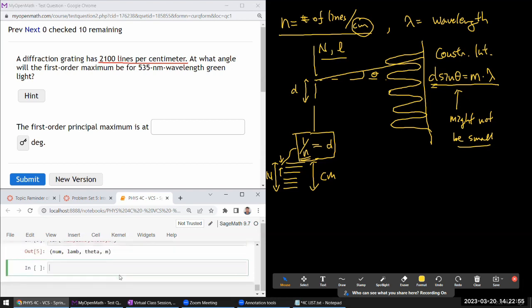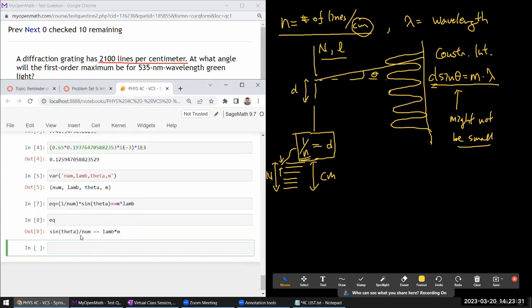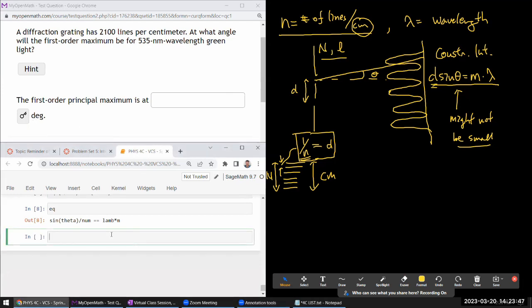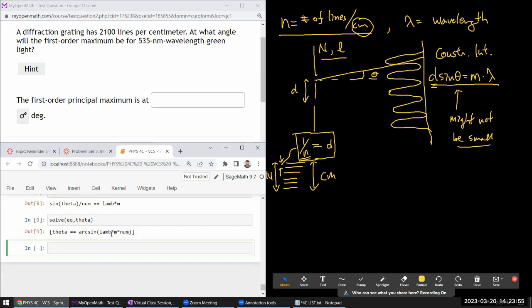The equation we're solving for is: instead of d, I'll put 1 over num times sine of theta equals m times lambda. I'm going to put this expression into a variable called equation. Then I'm going to have the computer algebra system solve for the variable I'm looking for, the angle. Let's solve this equation for theta. That looks right. I'm going to put that outcome in the first element of the last output into my variable.